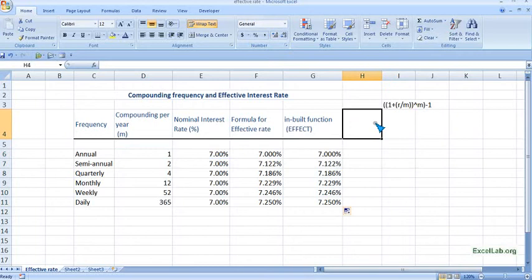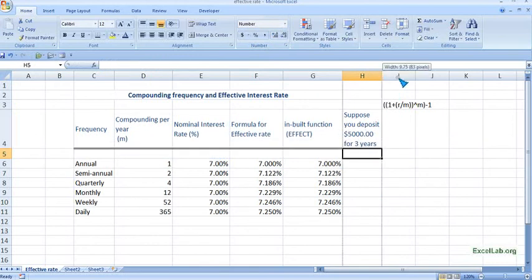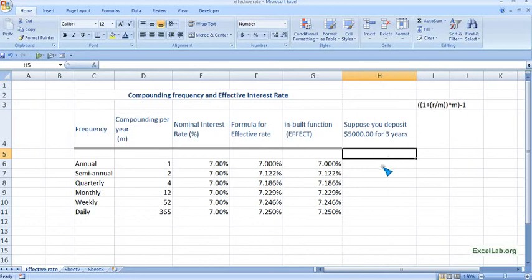Now we'll take one example. For instance, suppose you deposit five thousand dollars for three years. We will see the impact of the effective rate.